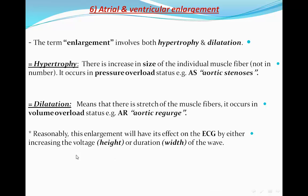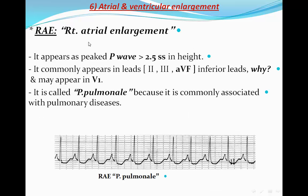This enlargement will have its effect on the ECG by either increasing the voltage, which is the height, or the duration, which is the width of the wave. Let's start with right atrial enlargement (RAE). It appears as a big P wave. As we know, the P wave shouldn't exceed 2.5 small squares in height. It commonly appears in leads 2, 3, and aVF — the inferior leads — because those leads go in the same direction as the P wave electrical axis. It can also appear in V1.